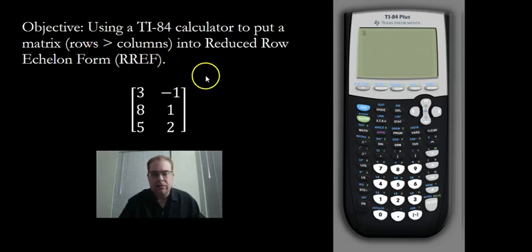In this video I'm going to show you how to use the TI-84 calculator to put a matrix, in particular a matrix that has more rows than columns, into reduced row echelon form.